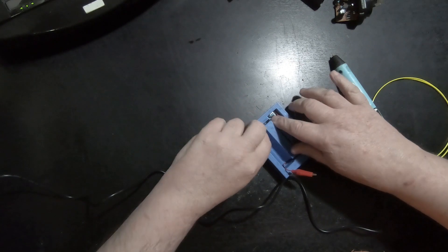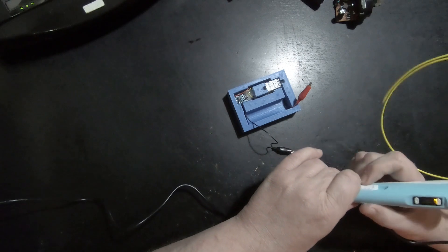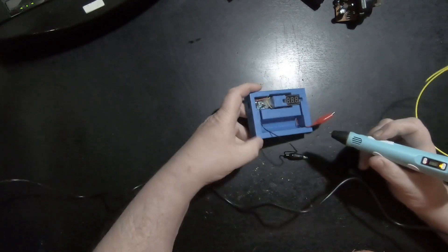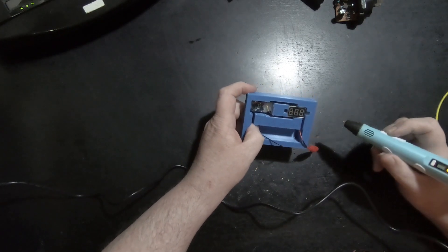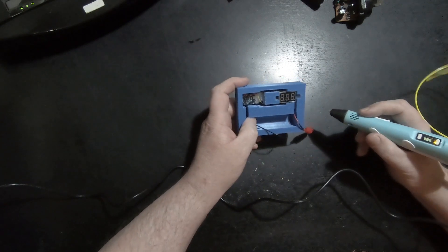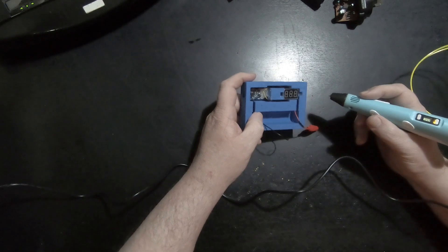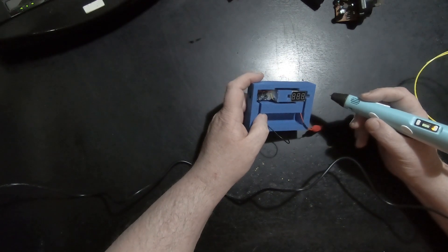So I was going to do something a bit simple and just fill in the space here with a bit of filament using the 3D pen. I mean I could of course use hot glue, but the 3D pen seems to do a pretty good job.